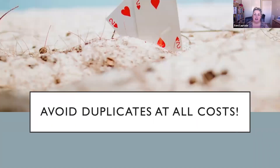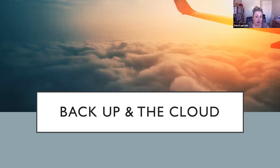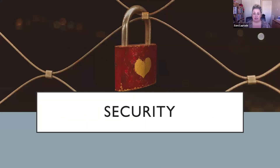Avoid duplicates at all costs. Every single time, ensure that if you're entering a new donor there's no duplicate. Look for variations like Mr. Robert Smith and Mr. Bob Smith. Always make sure you back up your database — if it's on your computers, back it up in another location. In the cloud, make sure backups are happening regularly, often daily. And database security is so key — especially if you've got credit card information stored for monthly donations.